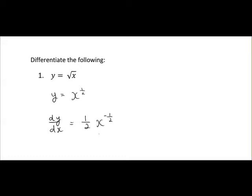We can leave it in this form, but if you want to tidy it up fully, that will give us a half by 1 over x to the power of a half. So x to the power of minus a half is the same as 1 over x to the power of plus a half. If you bring it below the line, it changes sign.